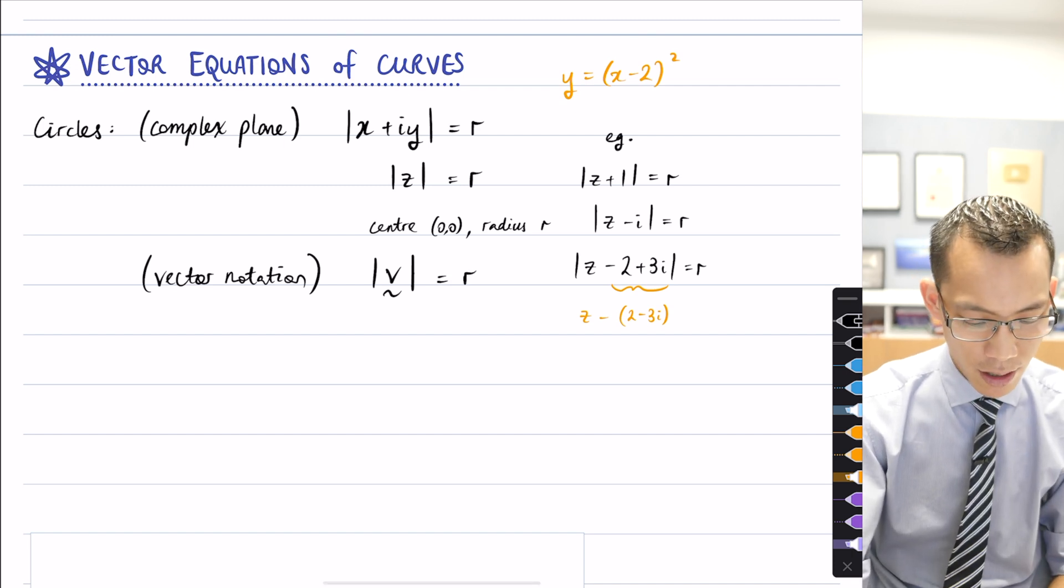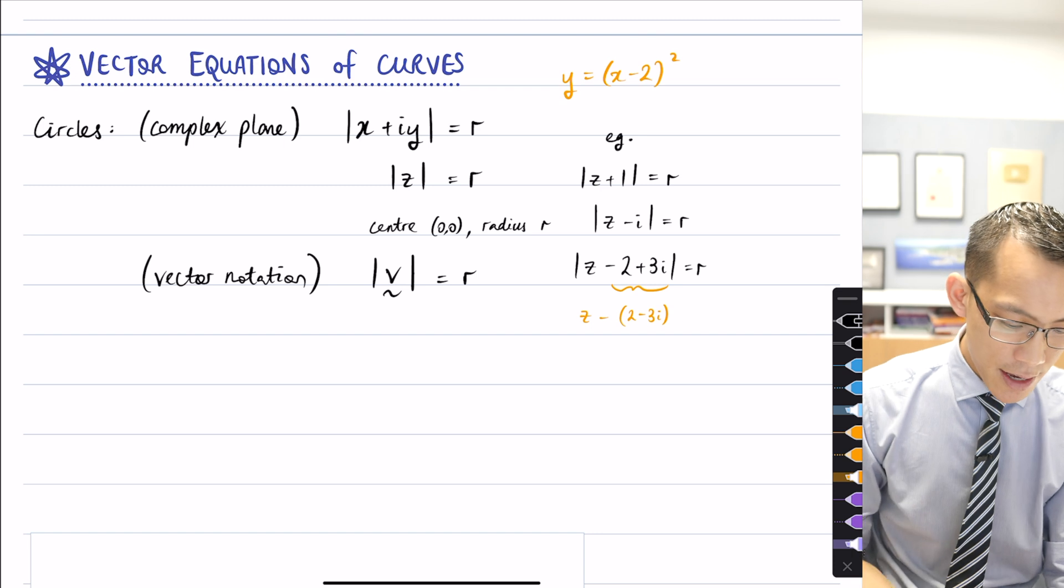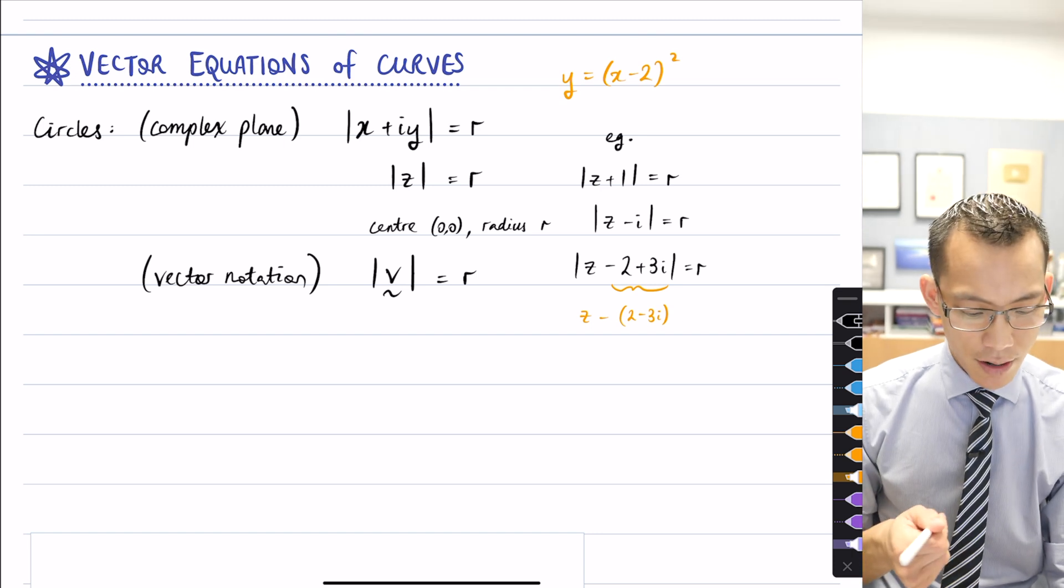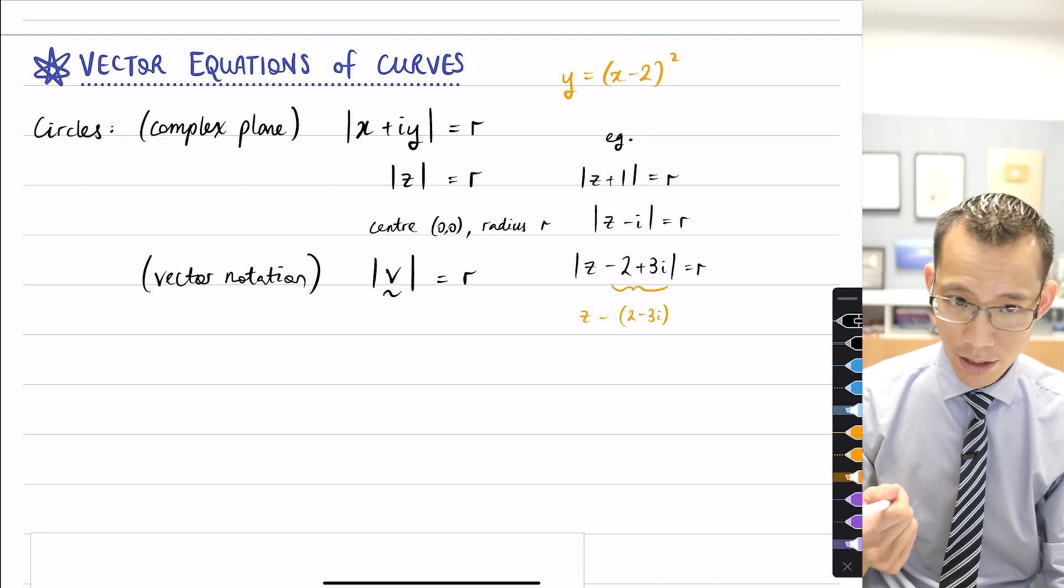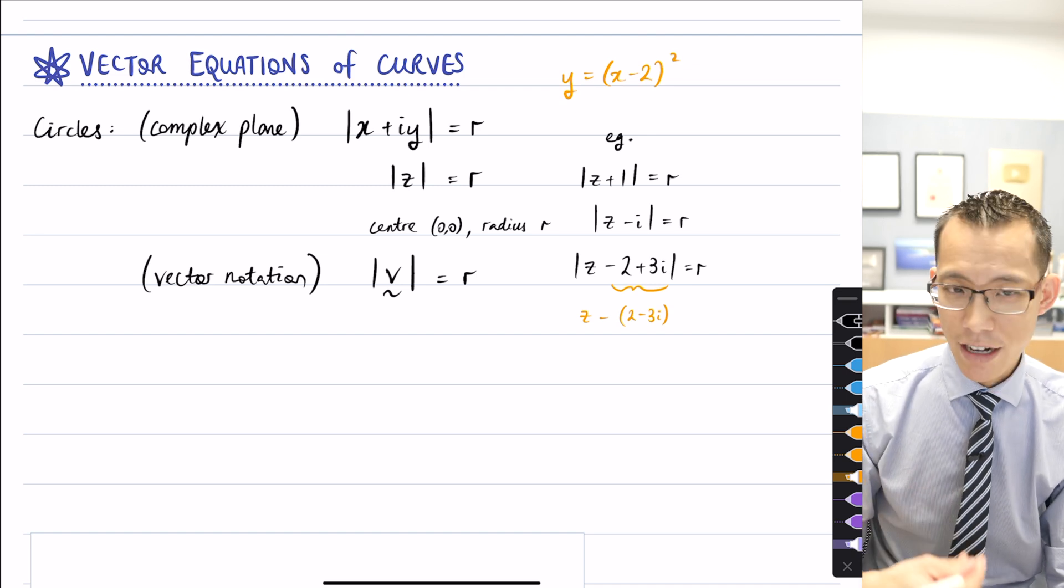Well, it's the same deal. We just want a radius. So this is the equation of, in two dimensions, a circle with center origin and radius r.